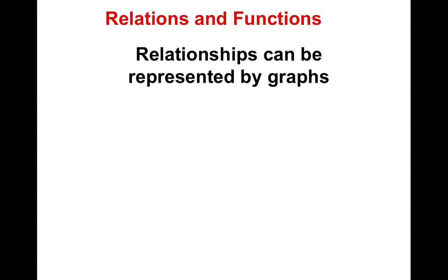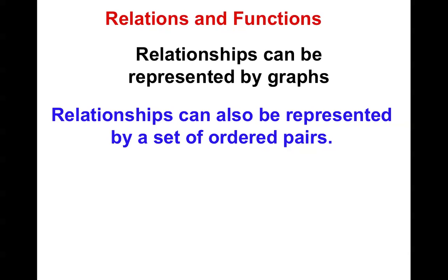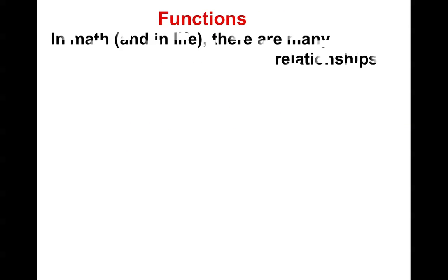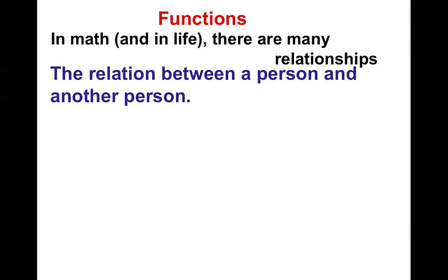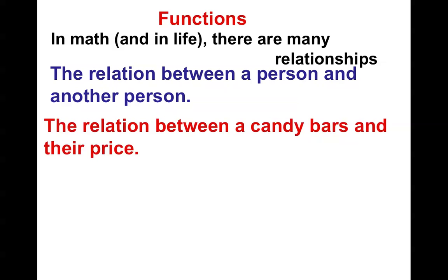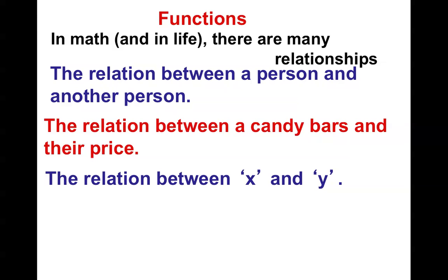We have relationships all over the place — with people, and we can even represent these relationships with graphs. We can make those graphs into a set of ordered pairs. There are relationships between a person and another person, between a candy bar and their price, and between X and Y, which is what we're going to be talking about in math.